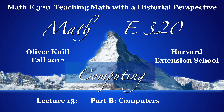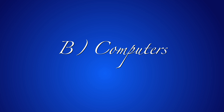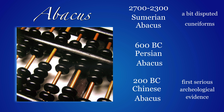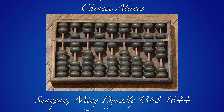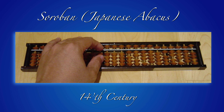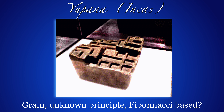Let's look a little bit at the history of computing. My choice is shaped by personal taste, especially in the later part where we look at some computers dear to me. The earliest computing device is the abacus, which could have been used already by Sumerian or Persian mathematicians. The first serious archaeological evidence is 200 BC when the Chinese abacus appeared. Also the Romans had abaci. Here is a Chinese abacus used a few hundred years ago, as they are sold still today.